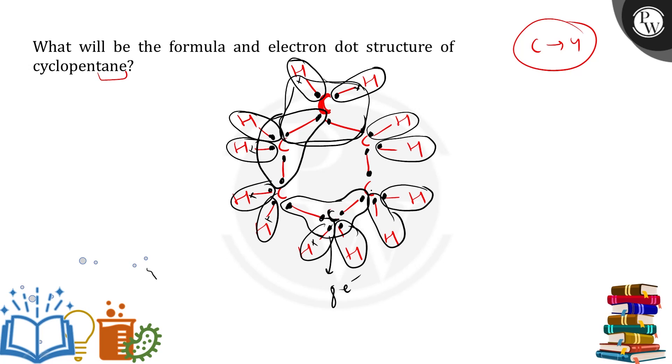How many? 4. Count: 1, 2, 3, 4. Now let's share: 5, 6, 7, 8. This way, we can form a cyclopentane Lewis dot structure.